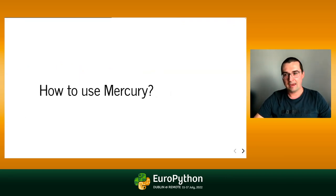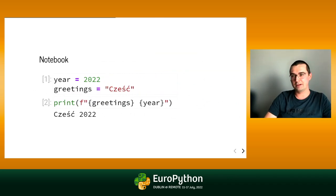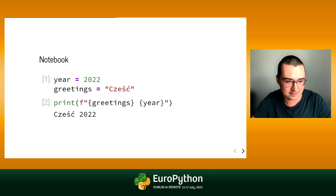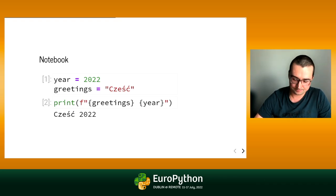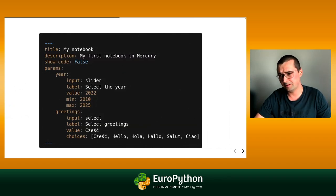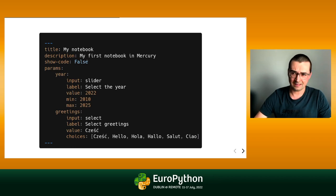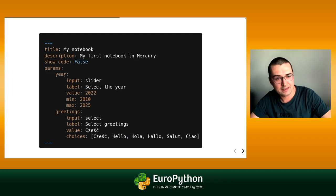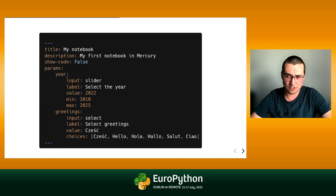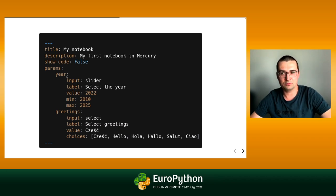How to use Mercury — it is pretty simple. Here is a very simple notebook with two cells: the first cell has two variables, year and greetings, and the second cell has a print statement with greetings and the year. To convert this into a web application, you add a YAML header at the top of the notebook. The header includes a title, description, a show_code parameter set to false to hide the code, and two widget parameters — year and greetings — whose names exactly match the variable names in the code.